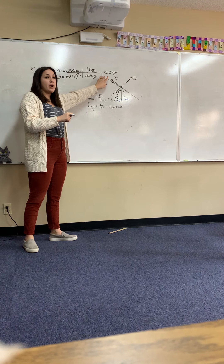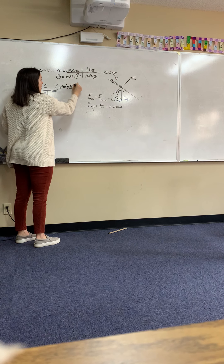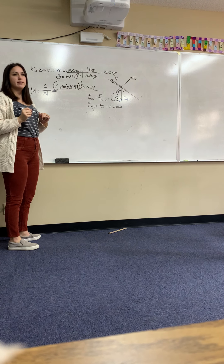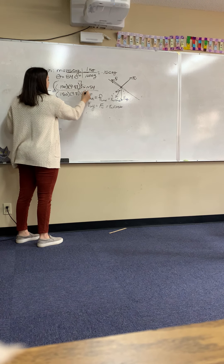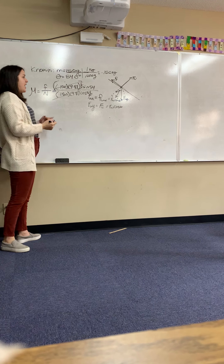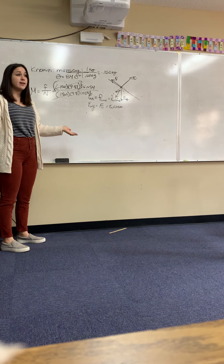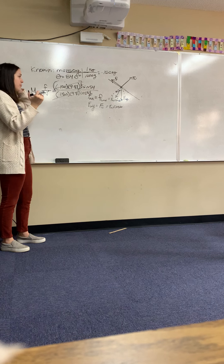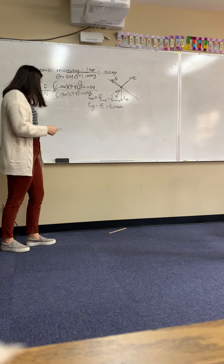The full calculation: convert to 0.150 kg, then do (0.150 × 9.81 × sin54°) divided by (0.150 × 9.81 × cos54°). The 0.150 × 9.81 terms cancel, leaving sin54° ÷ cos54°, which is the same as tangent. Either way you get the same answer — the tangent method is just fewer steps.